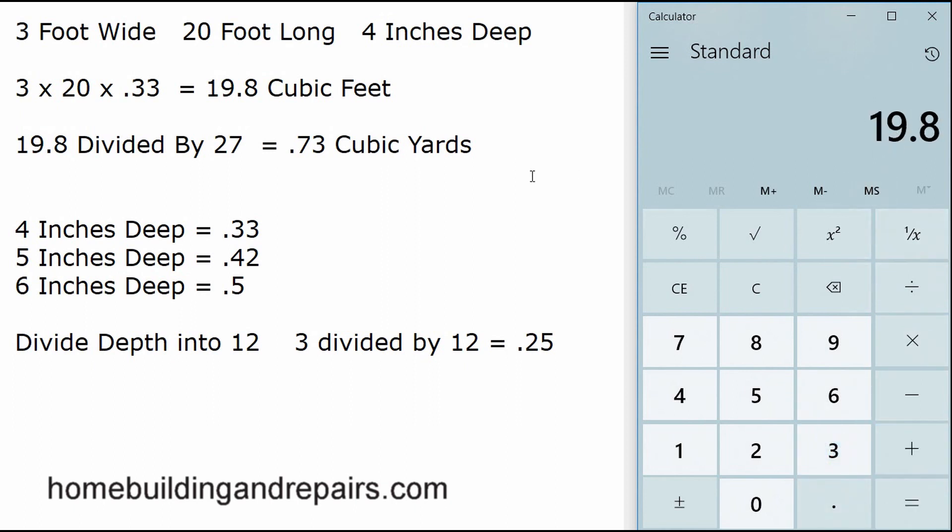There are 27 cubic feet in one yard of concrete. Keep this in mind: 27 cubic feet. I'm going to divide 19.8 divided by 27, and that's going to give me 0.73 cubic yards. So 19.8 divided by 27 equals 0.73. That's 0.73—0.75 is three-quarters—so that's three-quarters of a cubic yard.